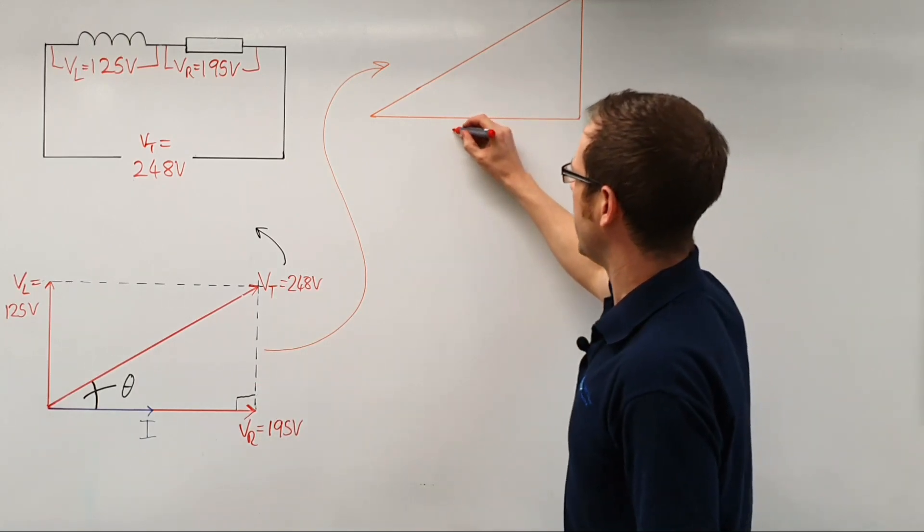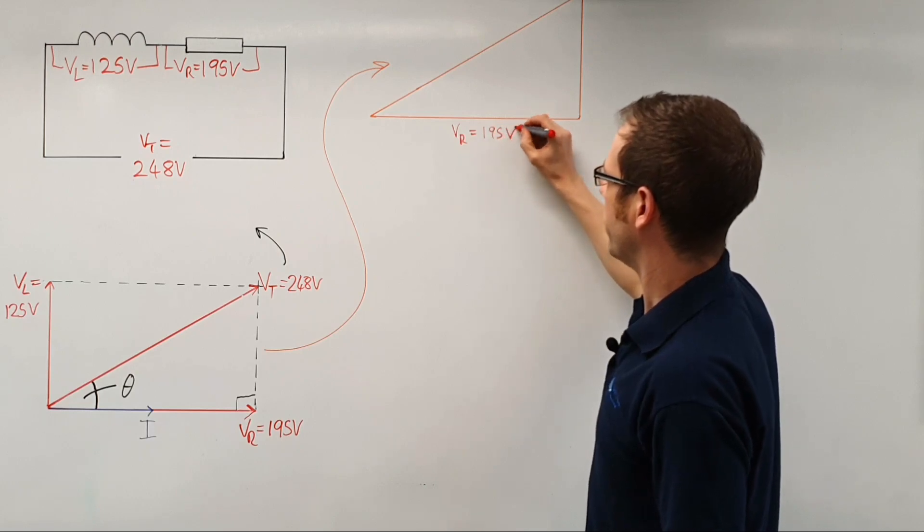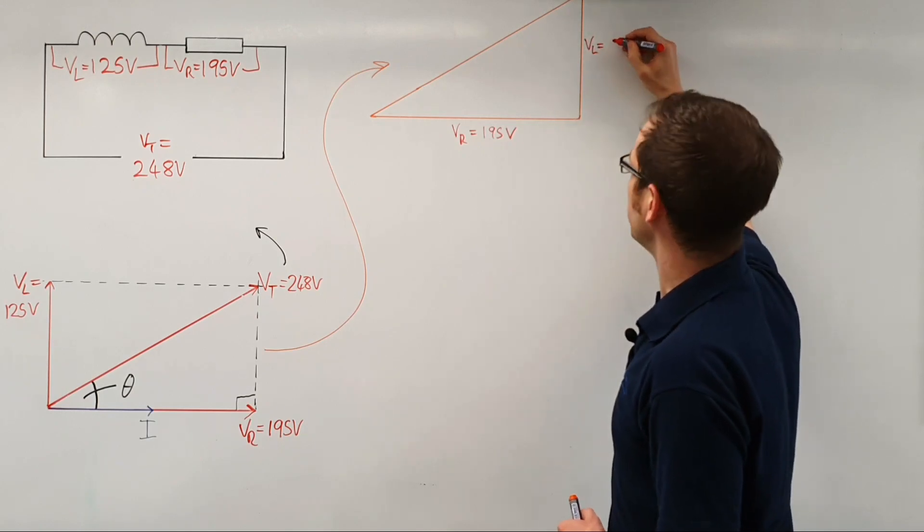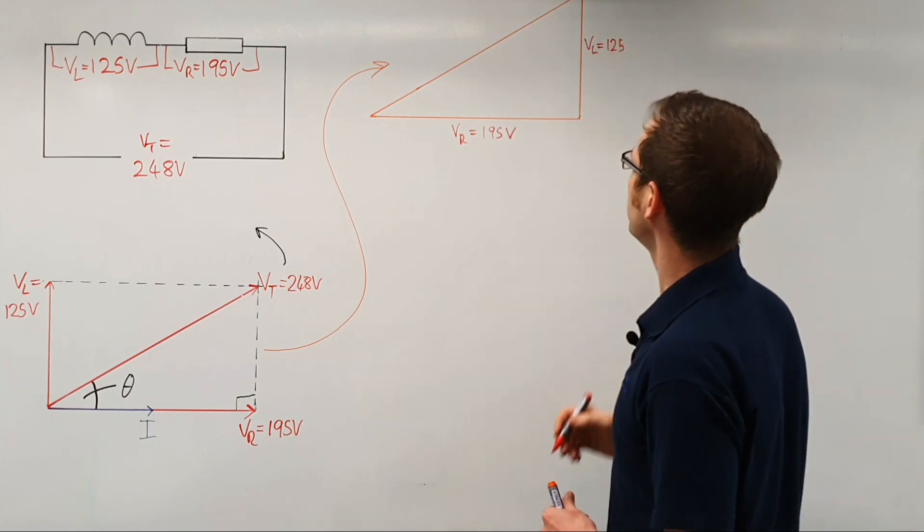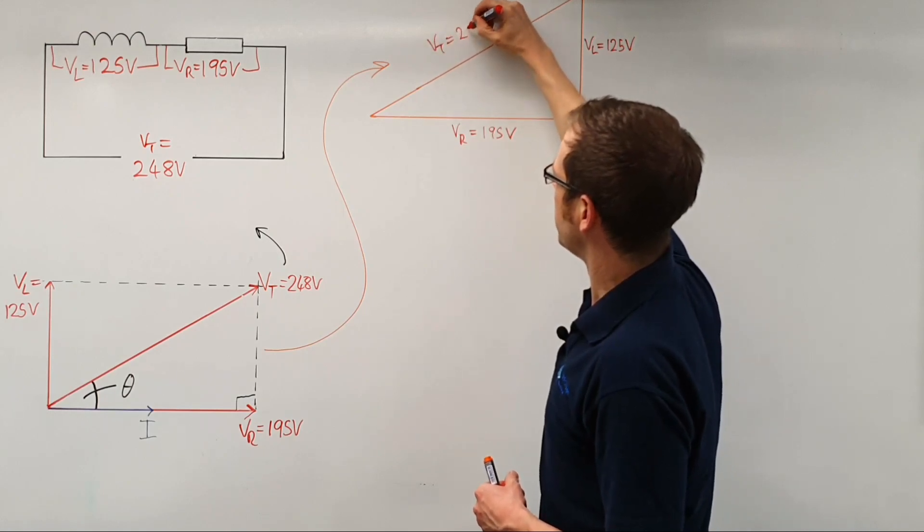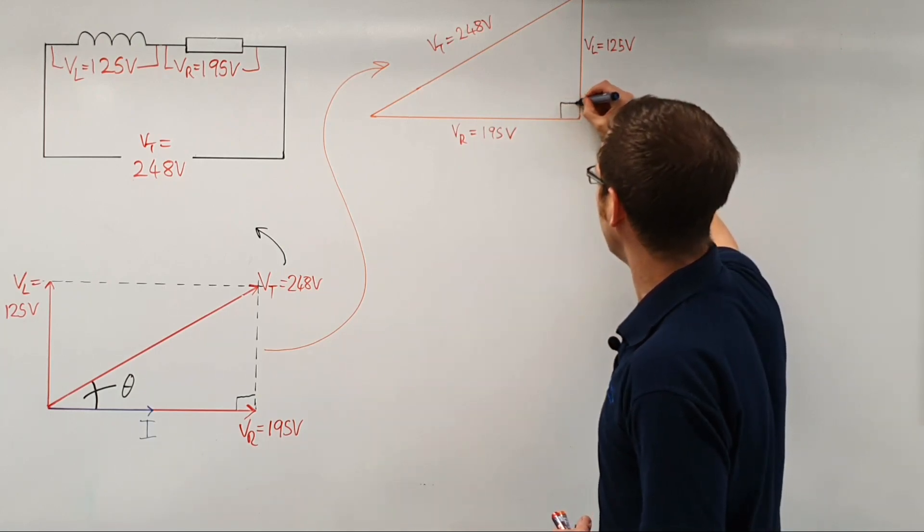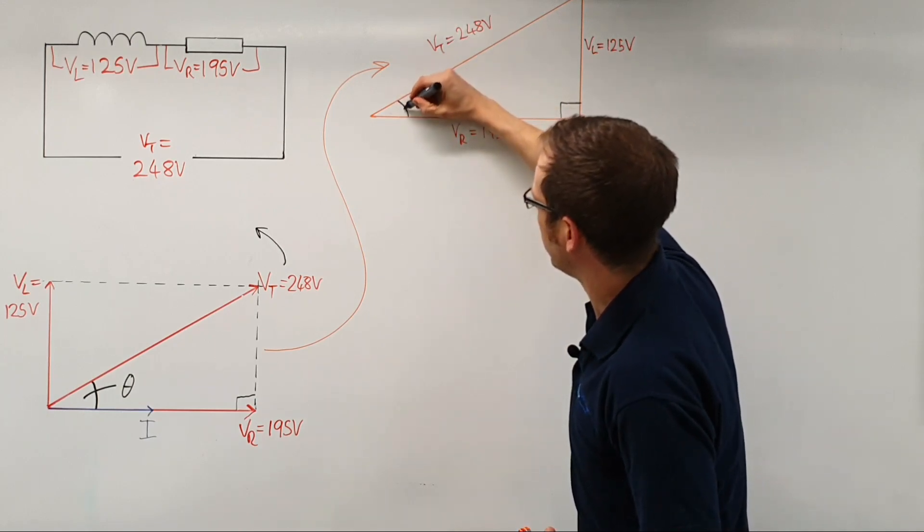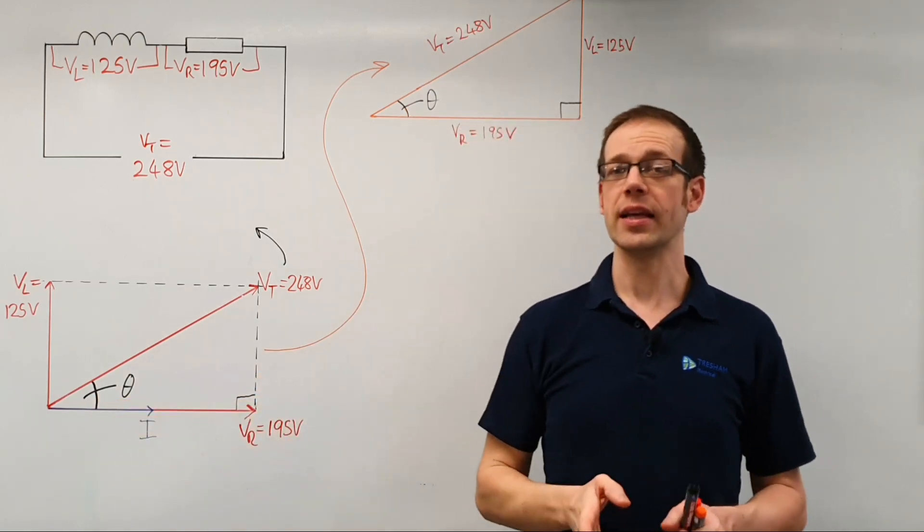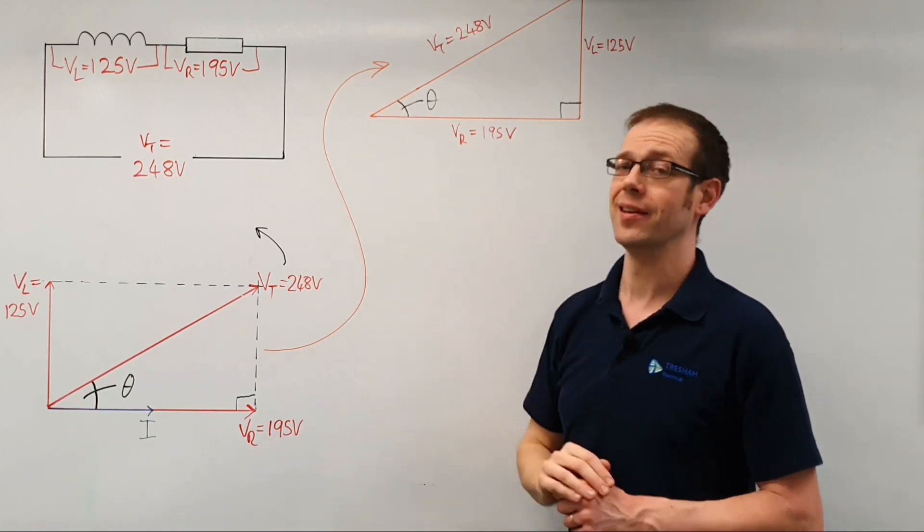If we look at that triangle now, you can see that it bears the same sizes as the triangle we've got down here. This side represents the resistive voltage, which is equal to 195 volts. So VR is equal to 195 volts. The length of this side VL is equal to 125 volts. This line here, the total voltage, is equal to 248 volts. We've still got a right angle down here in this corner and we've still got this angle here which represents the angle theta. The angle here actually represents how far out of phase the current and voltage are inside our fluorescent light circuit.